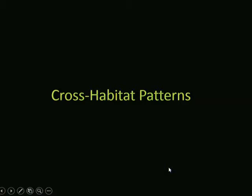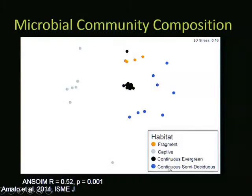What about across habitats? When a habitat is disturbed, the diet changes. Can gut microbes help howler monkeys respond to habitat changes? This data set includes single time point samples from howler monkeys in continuous evergreen rainforest, continuous semi-deciduous forest, fragmented evergreen rainforest, and captivity—the rehabilitation center only a few kilometers from the wild groups. You can clearly see distinct gut microbial communities associated with each distinct habitat.